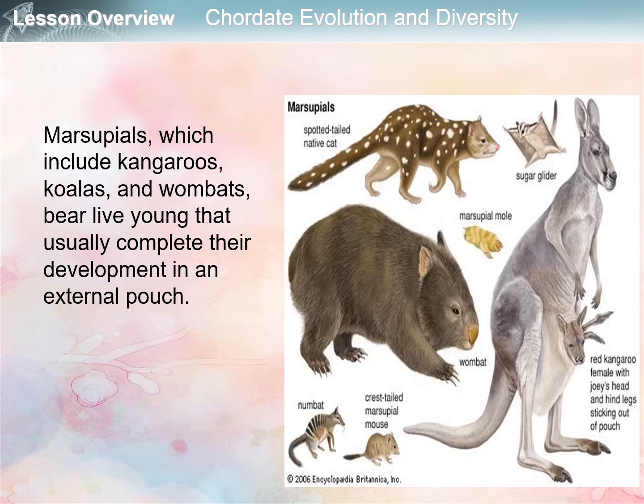Next are the marsupials, which include kangaroos, koalas, and wombats. They bear live young that usually complete their development in an external pouch, as shown in the figure with kangaroos and other examples of marsupials.